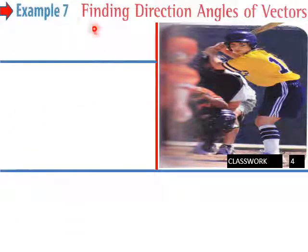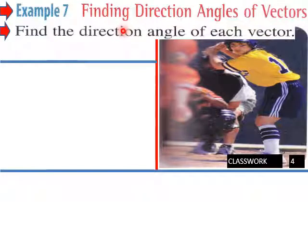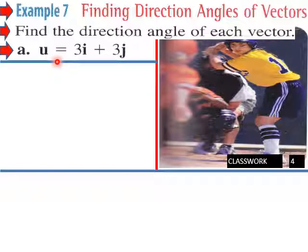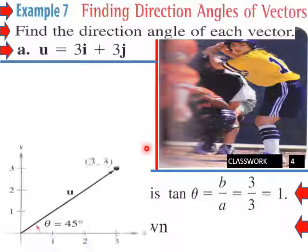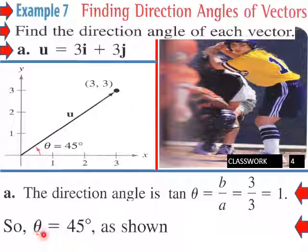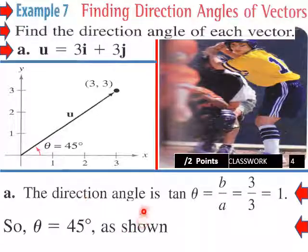Now let's find direction angles of vectors. Find the direction angle of u equals 3i plus 3j. In this situation, tan θ equals b over a equals 3 over 3, which equals 1. So tan θ equals 1, therefore theta equals 45 degrees, with the vector pointing out at (3, 3) as shown.